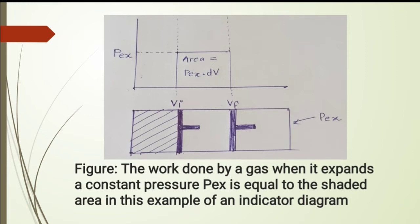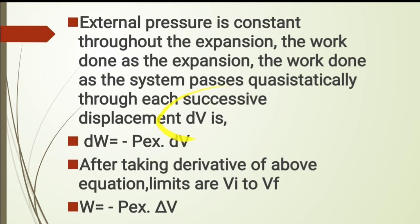Our definition of work is W = P·ΔV. More precisely, dW = −P_external · dV. After integrating with limits from VI to VF, we get W = −P_external · ΔV, where delta represents the change between initial and final positions.